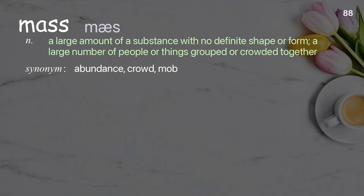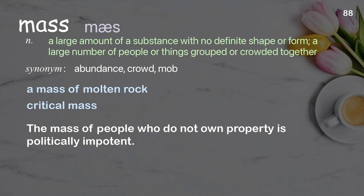Mass: a large amount of a substance with no definite shape or form; a large number of people or things grouped or crowded together. Examples: a mass of molten rock, critical mass. The mass of people who do not own property is politically impotent.